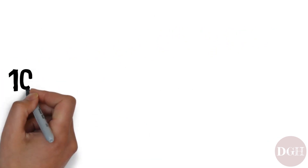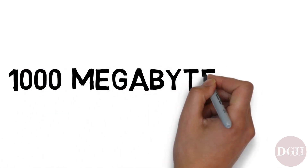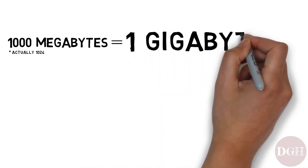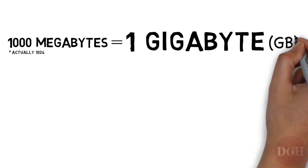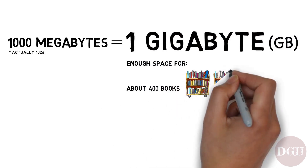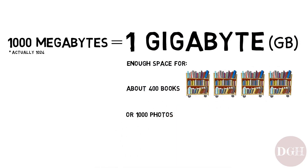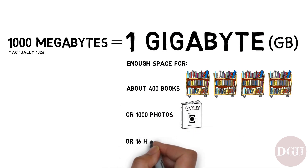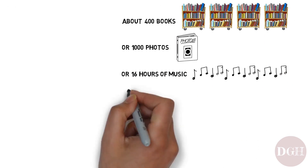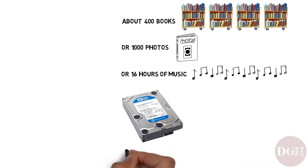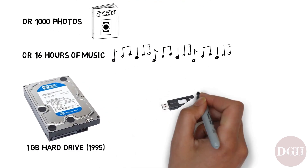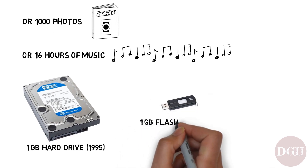Now you're probably wondering, what's it called if you have 1,000 megabytes? 1,000 megabytes is called a gigabyte. It's enough space to hold about 400 books, or 1,000 pictures, or 16 hours of music. By the mid-1990s, you could buy a 1 gigabyte hard drive for a couple hundred bucks. Today, you can buy a 1 gigabyte flash drive for about $5.